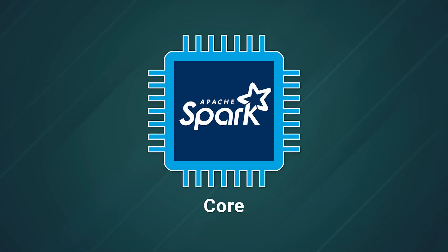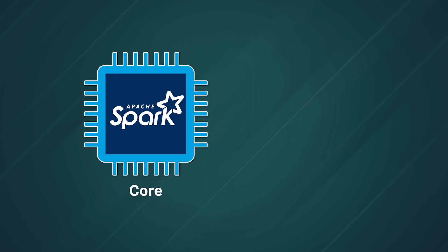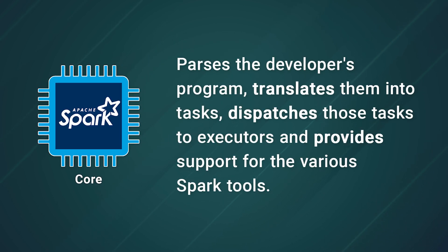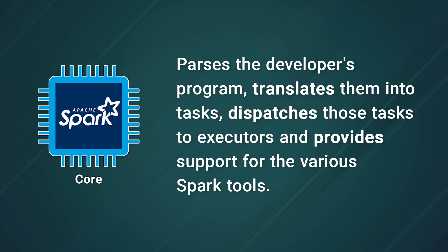So how does Spark work? Apache Spark has three main design pillars. The first is the Spark Core. This component is responsible for parsing the developer's program, translating them into tasks, and dispatching those tasks to executors. The Spark Core also provides support for the various Spark tools.